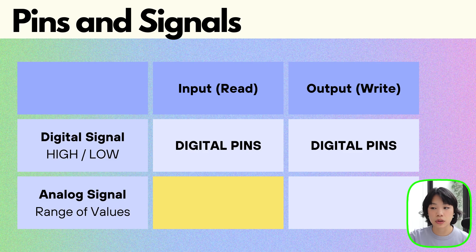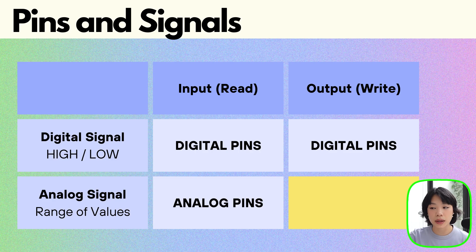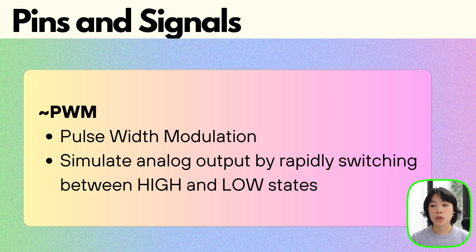For reading an analog signal, we can use an analog pin as expected. But this is where it gets a little confusing: to write analog signals, we actually cannot use analog pins — we will be using digital pins instead, specifically the ones with the tilde or squiggly symbol in front. These pins are often referred to as PWM pins, which stands for pulse width modulation. This is a technique that allows us to simulate analog output by rapidly switching between high and low states — so we're generating digital outputs so fast that it seems like analog output.